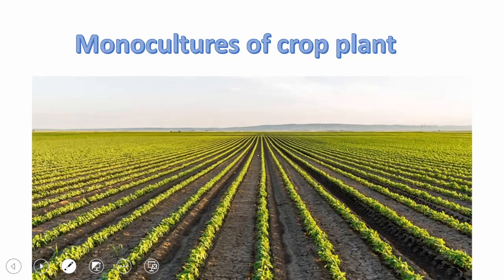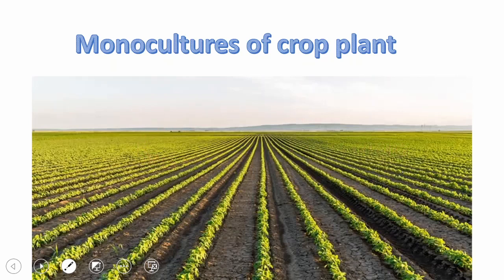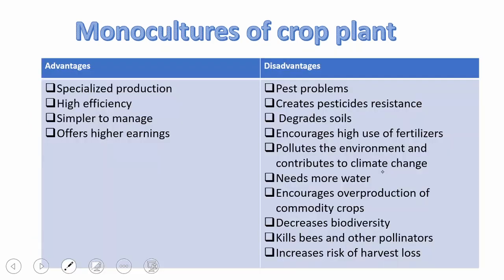Now we will talk about monocultures — the advantages and disadvantages. Monoculture means growing the same plants over and over every year. This practice is widely spread all over the world and results in massive production of wheat, rice, potato, and other plants. Let's look at the advantages and disadvantages of monocultures.